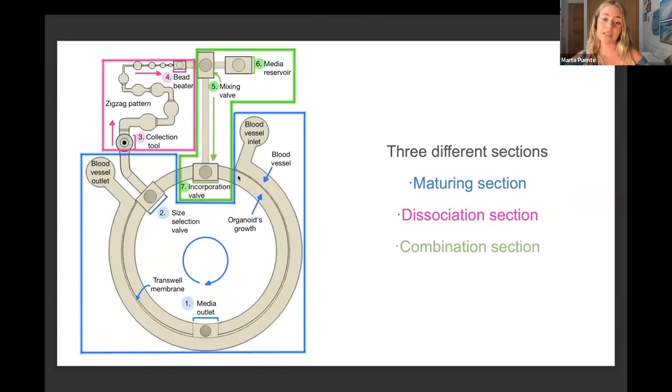In the design, we can identify three different sections. In the first one, the maturation section, we can see the channel where the organoids are growing, connected to a blood vessel channel through a transwell membrane. The objective of this setup is to not only feed the organoids but also remove the dead cells. In the middle, we can see the media outlet, which is essential because with it we can access the old media and clean the environment where the organoids are growing. At the end, we can see what I call a size selection valve, which selects the largest organoid to move on to the next section. Organoids that are not big enough will go through the whole cycle again.